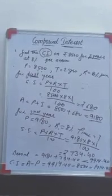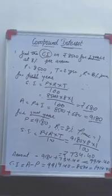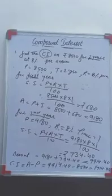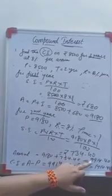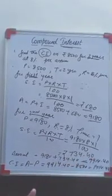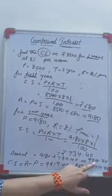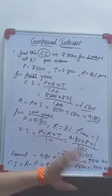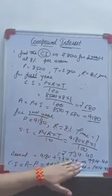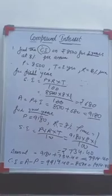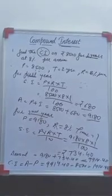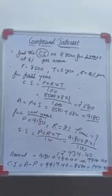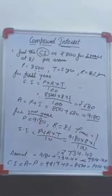You cannot calculate it directly for 2 years or 3 years or 5 years. You need to go one by one — for the 1st year, 2nd year, 3rd year. If it is asked for 3 years, then this amount will be the principal for the 3rd year. You need to calculate the interest and add it to get the amount for however many years are being asked.